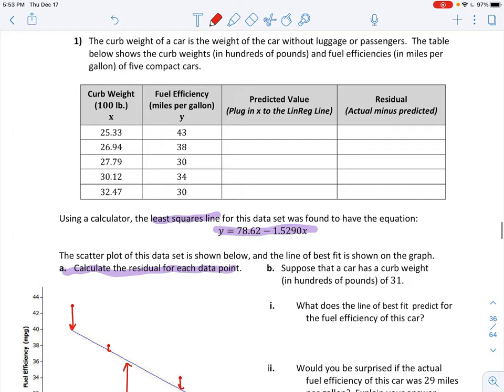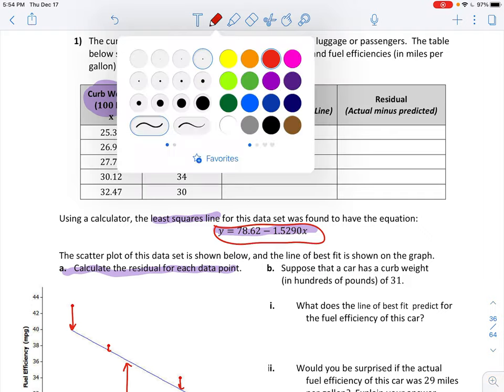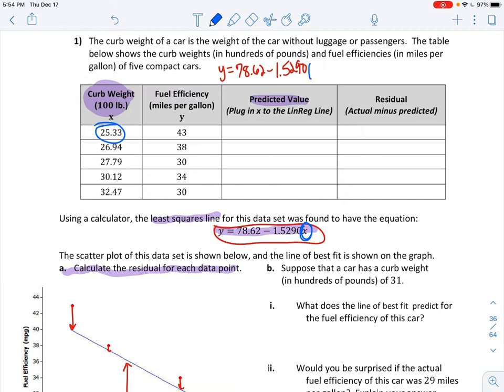I already went ahead and gave you the least squares line, which also means the line of best fit. Here is the equation. I even went ahead and graphed it for you. So remember how this works. You're going to take this purple equation here and substitute in these curb weights. And that's going to be your predicted value. So what I'm doing is, for instance, I'm doing y equals 78.62 minus 1.5290, and for this x I'm substituting in 25.33. So when I pop that into my calculator, I get 39.89. Now I want to do the next one. I'm going to substitute in 26.94. When you pop that whole thing into your calculator, you get 37.43.